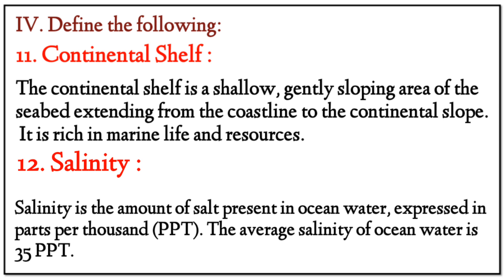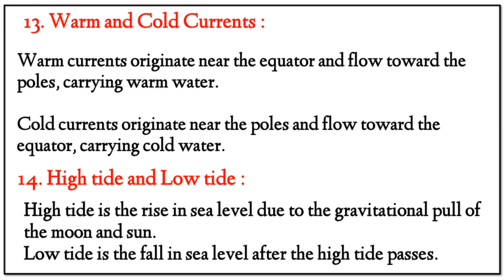Question 13 — Warm and Cold Currents: Warm currents originate near the equator and flow towards the poles, carrying warm water. Cold currents originate near the poles and flow towards the equator, carrying cold water. Question 14 — High Tide and Low Tide: High tide is the rise in sea level due to the gravitational pull of the moon and sun.